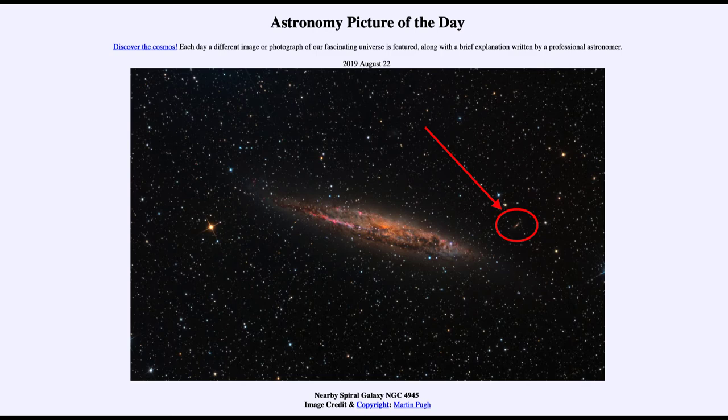So that was our picture of the day for August the 22nd of 2019. It was titled nearby spiral galaxy NGC 4945. We'll be back again tomorrow for the next picture previewed to be California Dreamin'. So we'll see what that is about tomorrow. And until then, have a great day everyone, and I will see you in class.